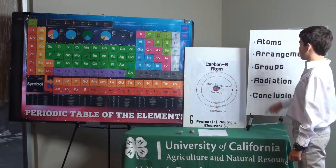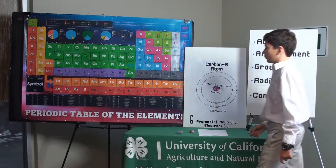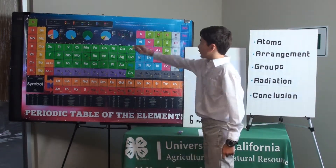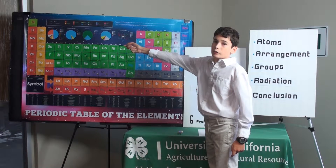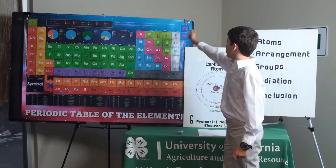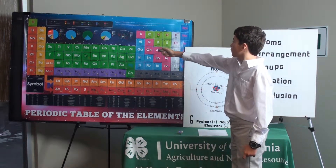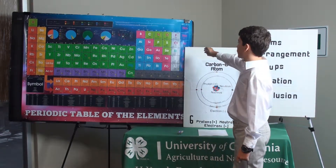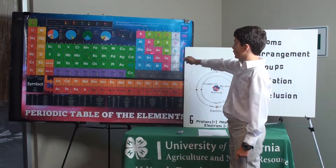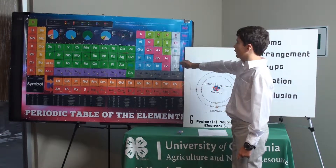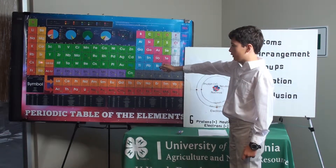Let's go over the arrangement of the periodic table. We start here with element one, hydrogen, we go to two, helium, and so on, moving down the line until we reach number 56.